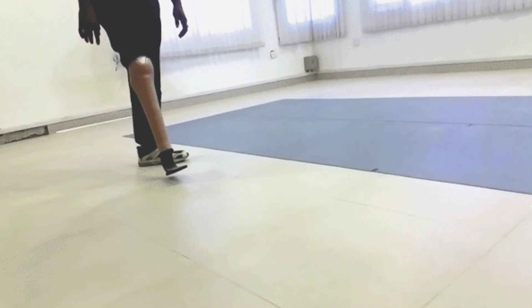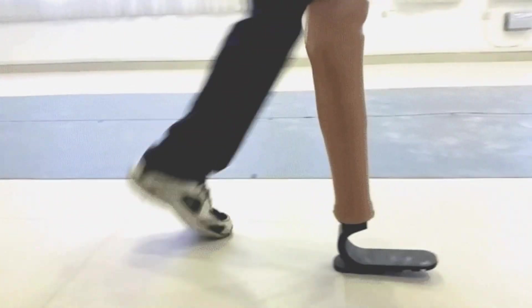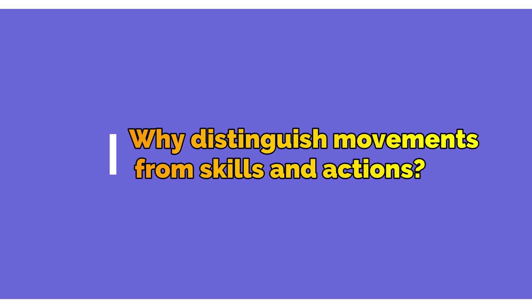But consider a skill like walking. Although walking may seem to be something that humans do naturally, it must be learned by the infant who is attempting to move in his or her environment by this new and exciting means of locomotion. Walking is a skill that some people may need to relearn — for example, people who have had strokes, hip or knee joint replacements, or who must learn to walk with an artificial limb.